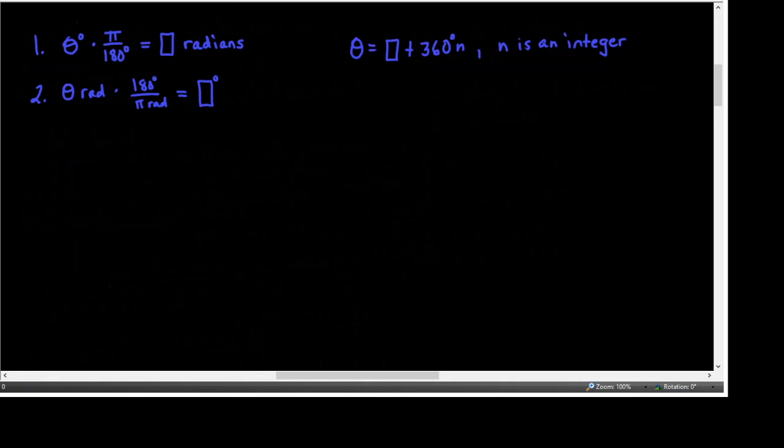Memorize may sound harsh, but in reality once you've done it enough times it just becomes second nature. These are things you are responsible for knowing without a cheat sheet — I don't allow cheat sheets on tests. Hopefully by doing enough problems you'll just know the process. Let's do a few examples: convert 45 degrees into radians.